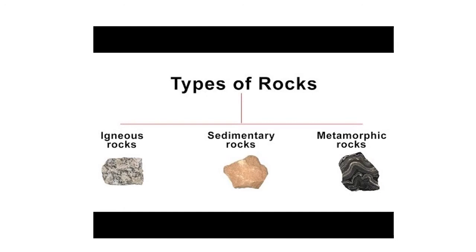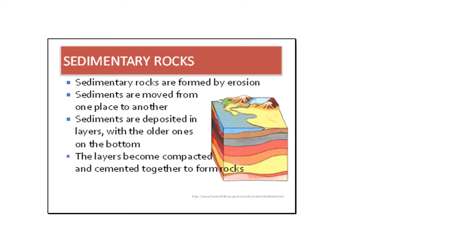Now we have the two other types of rocks: the sedimentary and the metamorphic rocks. The second type is the sedimentary rocks. The word sedimentary is derived from a Latin word, sedimentum, which means settling down. Sedimentary rocks are the result of erosion. When rocks are subjected to weathering, they get broken down into fragments. These fragments are carried down by various agents of erosion like running water and glaciers. Once they reach an area where the speed gets reduced, the sediments are deposited in layers with the older ones at the bottom.